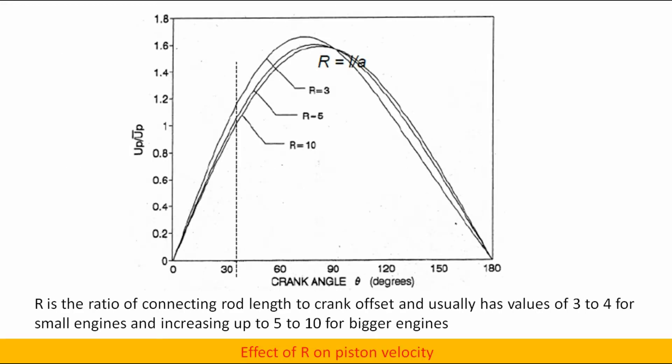Let's see effect of R on piston velocity. R is the ratio of connecting rod length to crank offset and usually has values of 3 to 4 for small engines and increasing up to 5 to 10 for bigger engines.